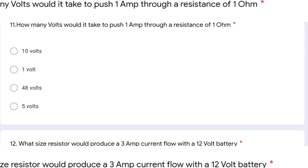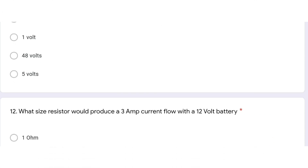How many volts would it take to push 1 ampere through a resistance of 1 ohm? This is also based on Ohm's law. Using V = IR, voltage = 1 ampere × 1 ohm = 1 volt. Volt is the SI unit of voltage.